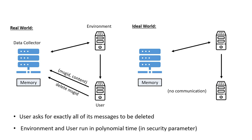The second restriction is that the environment and the user are both polynomial algorithms in some security parameter. We do the same thing in the ideal world with the same environment and user. Someone comes to us with a data collector and asks whether it satisfies our property. We consider this hypothetical interaction between the data collector, the adversarial environment, and the user, let the execution run, let them communicate, and let the data collector run its algorithms. The execution proceeds and at some point it terminates.